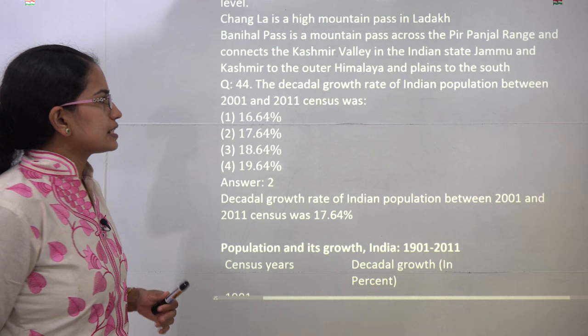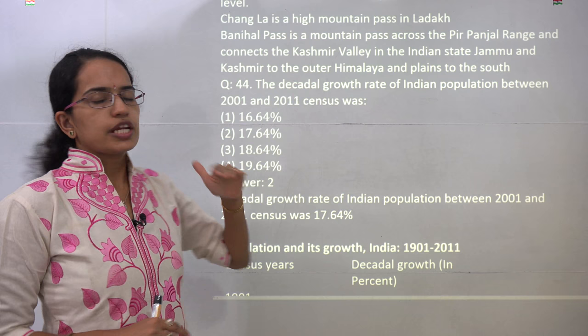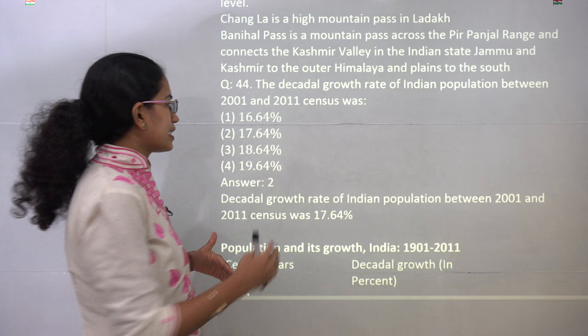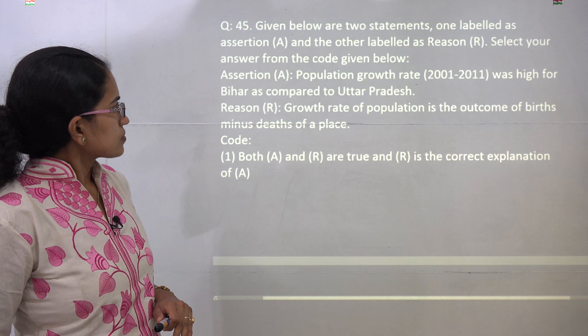The next question is again about the census. There are typically 2 to 3 census questions asked each time. This time there was a question on the Decadal Growth Rate. The Decadal Growth Rate has declined from the 1991–2001 period to 2001–2011, and the current Decadal Growth Rate for 2001–2011 is 17.64%. So 2 is the correct answer.